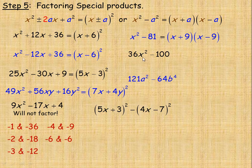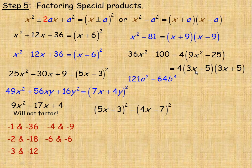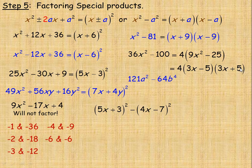36x squared minus 100 is the difference of two perfect squares, but hold on — there's also a common factor. Don't forget common factoring from step 1. You can divide each term by 4, so we factor out a 4. 36x squared divided by 4 is 9x squared, and negative 100 divided by 4 is minus 25. This is still the difference of two perfect squares. The square root of 9x squared is 3x, and the square root of 25 is 5. So the full factored form is 4 times 3x plus 5 times 3x minus 5.